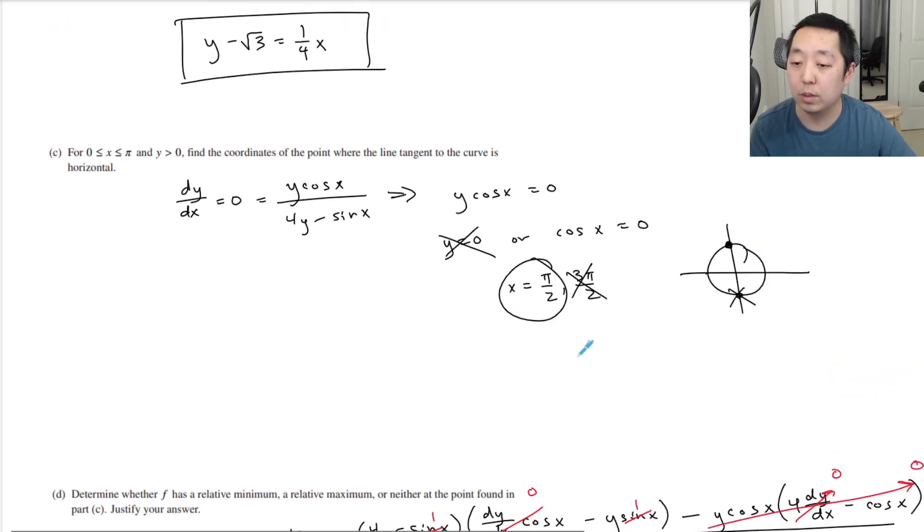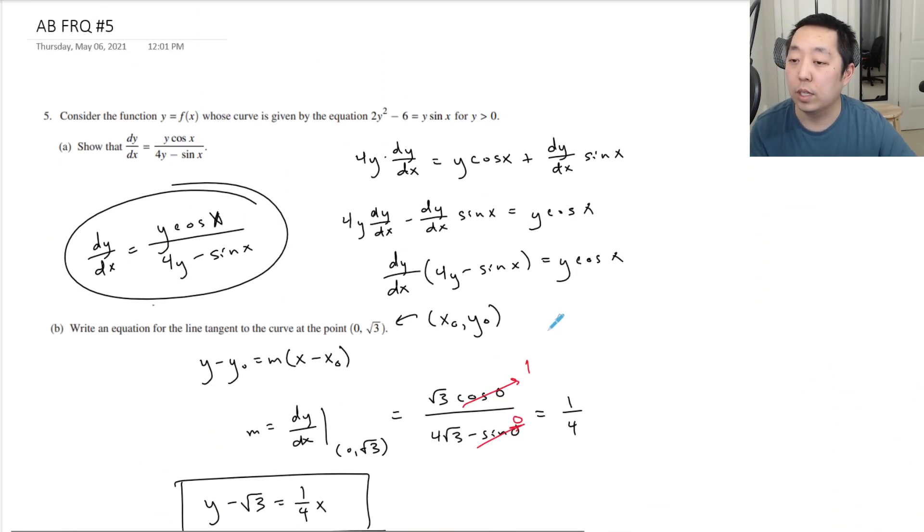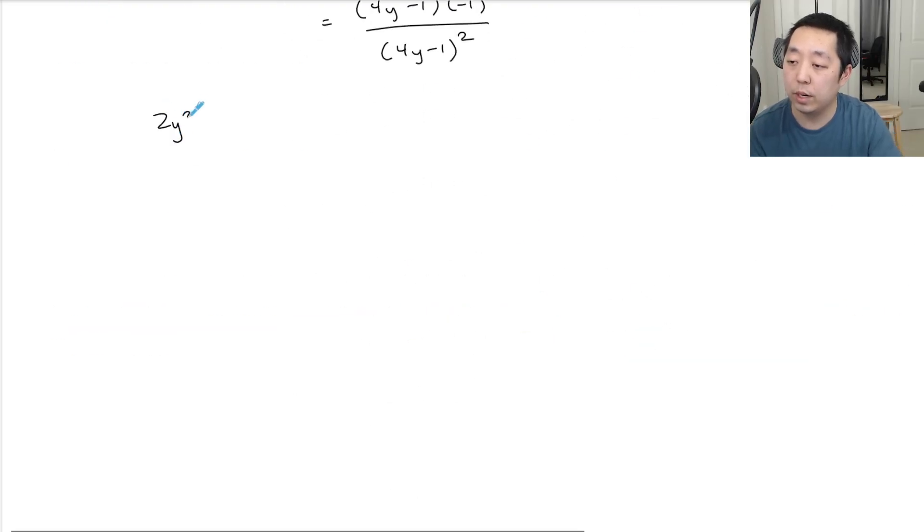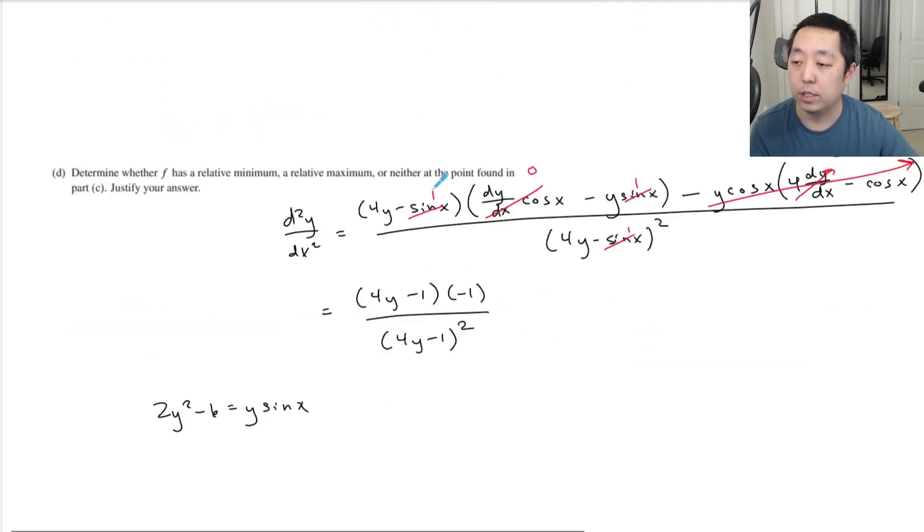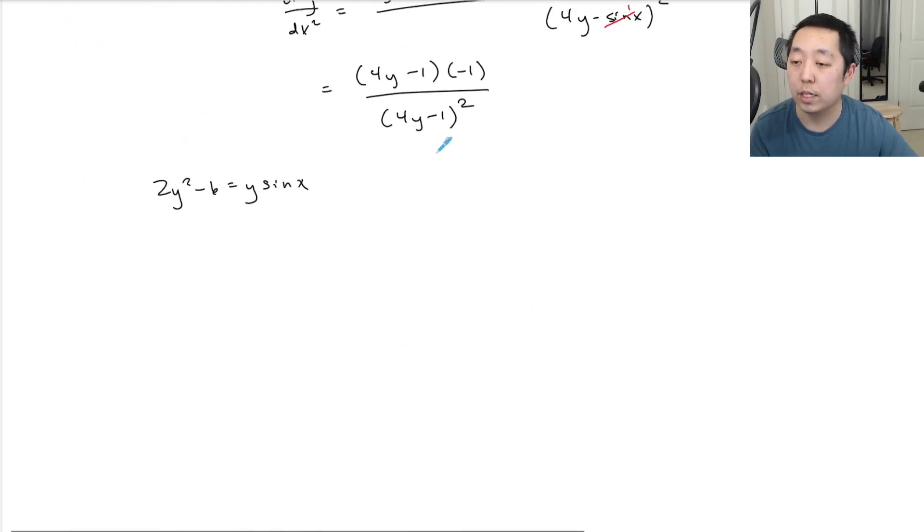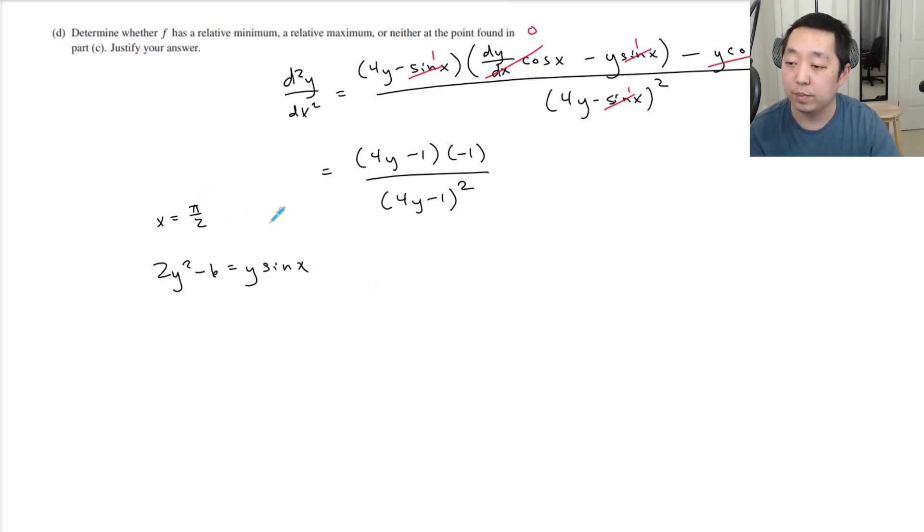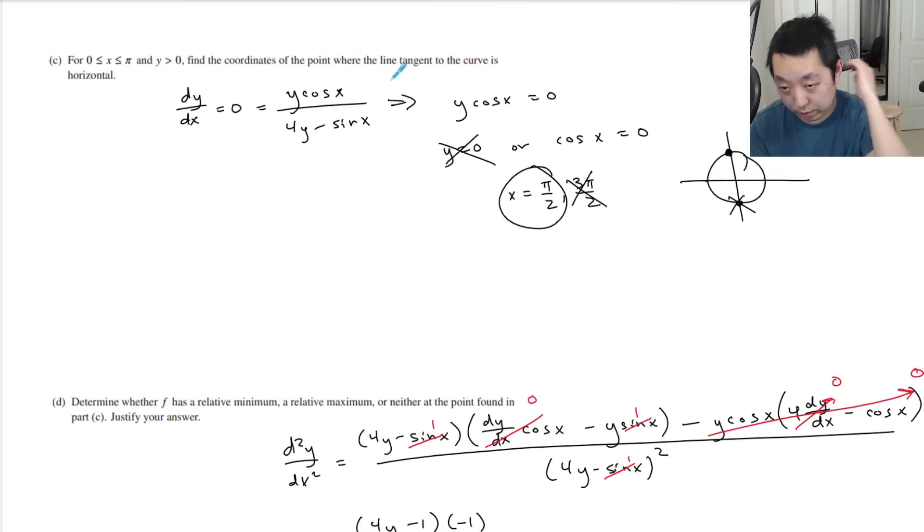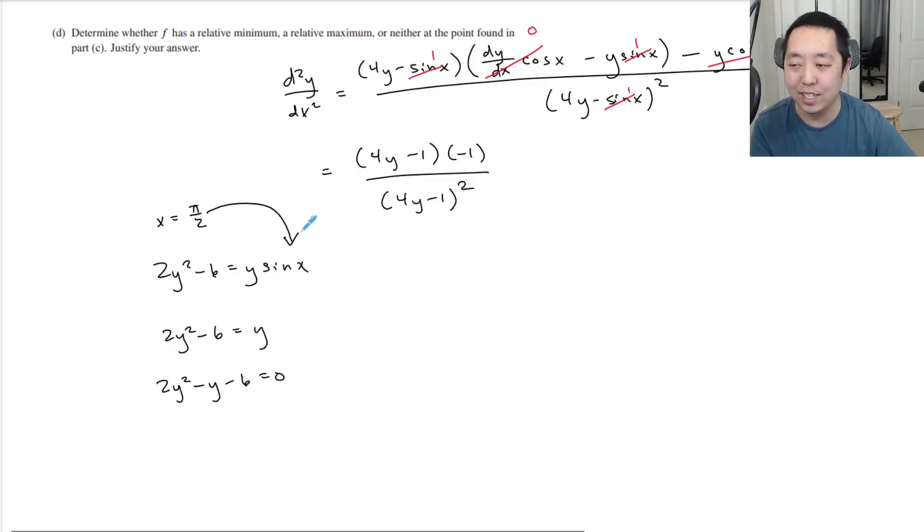What is the y coordinate when x is pi over two? We really need to know what the y coordinate is. So we look at the original equation. Two y squared minus six. So we had two y squared minus six is equal to y sine x. Let me double check if that was right. Two y squared minus six equals y sine x. And so we're saying x is equal to pi over two at this point. So I plugged that into there. Sine of pi over two is one. So I have two y squared minus six is equal to y. And two y squared minus y minus six is equal to zero. It just occurred to me that they find the coordinates of the point on the previous problem. So I never actually did that. So that's kind of why we kind of mess up. So we're sort of doing that now in part D.